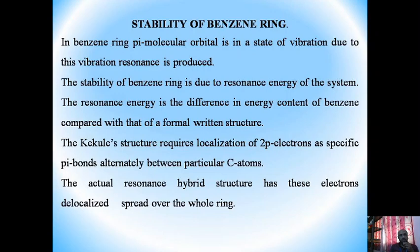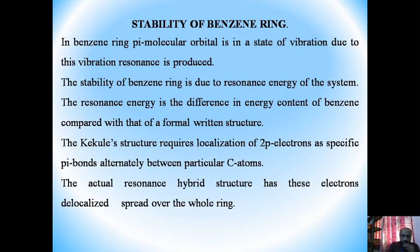The stability of the Benzene ring is due to the resonance energy of the system. The resonance energy is the difference in energy content of Benzene compared with that of a formally written structure. The classical structure requires localization of two pi electrons as specific pi bonds alternately between particular carbon atoms. The actual resonance hybrid structure has these electrons delocalized, or spread over the whole ring.